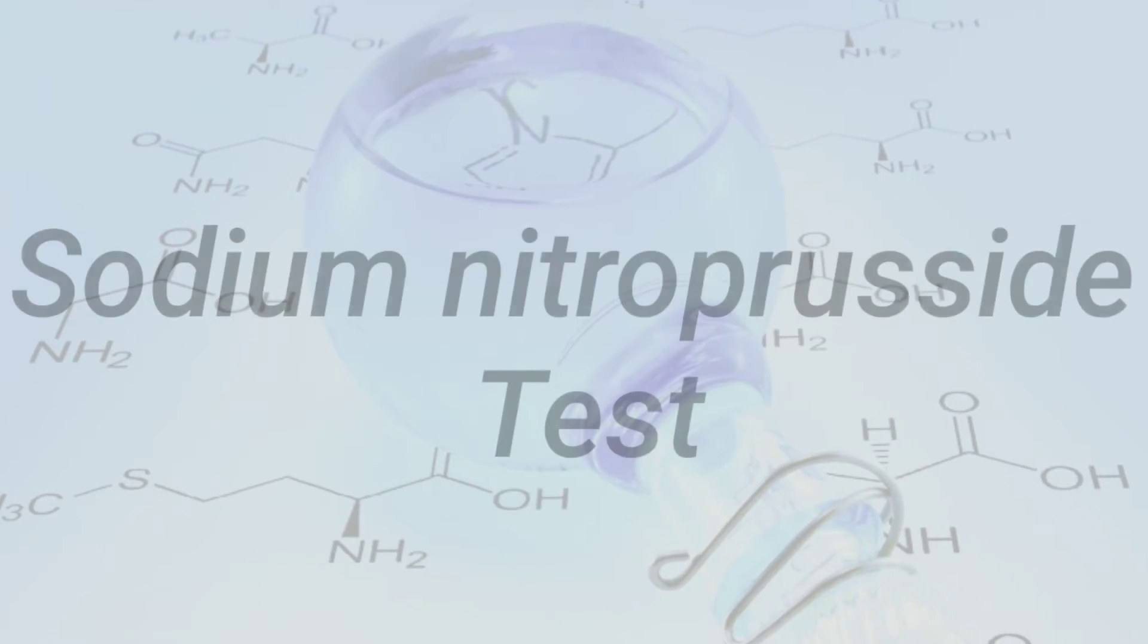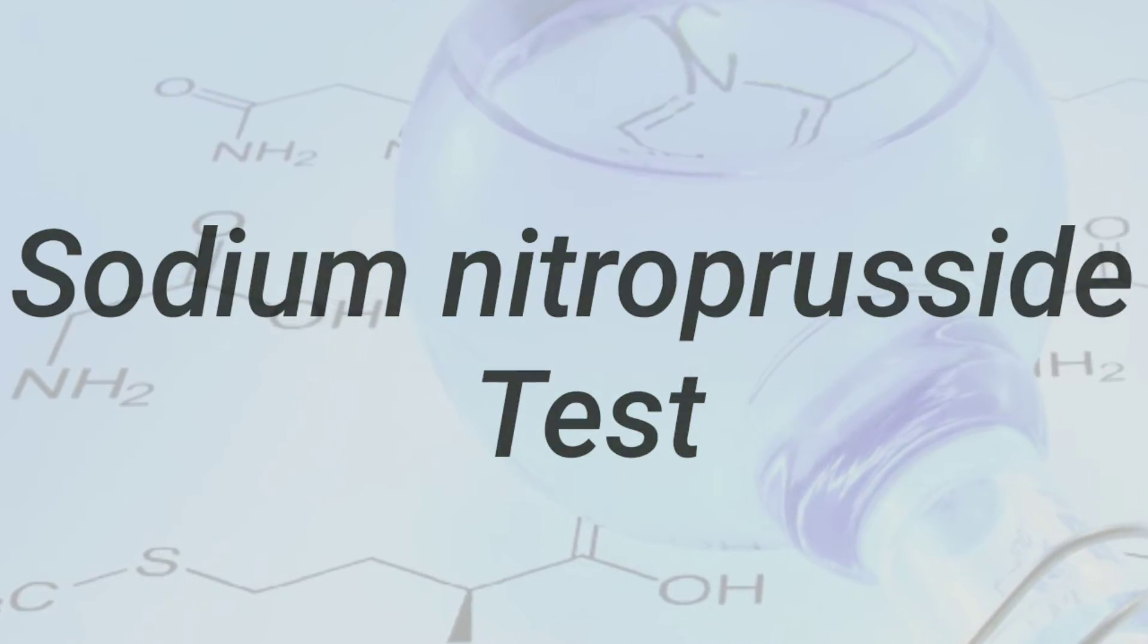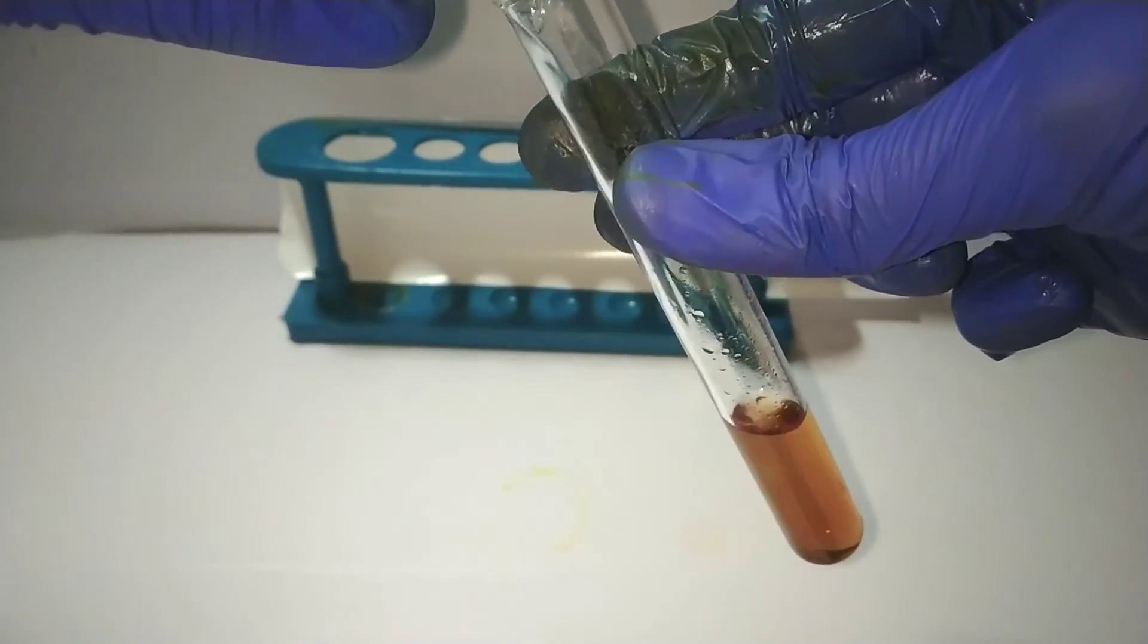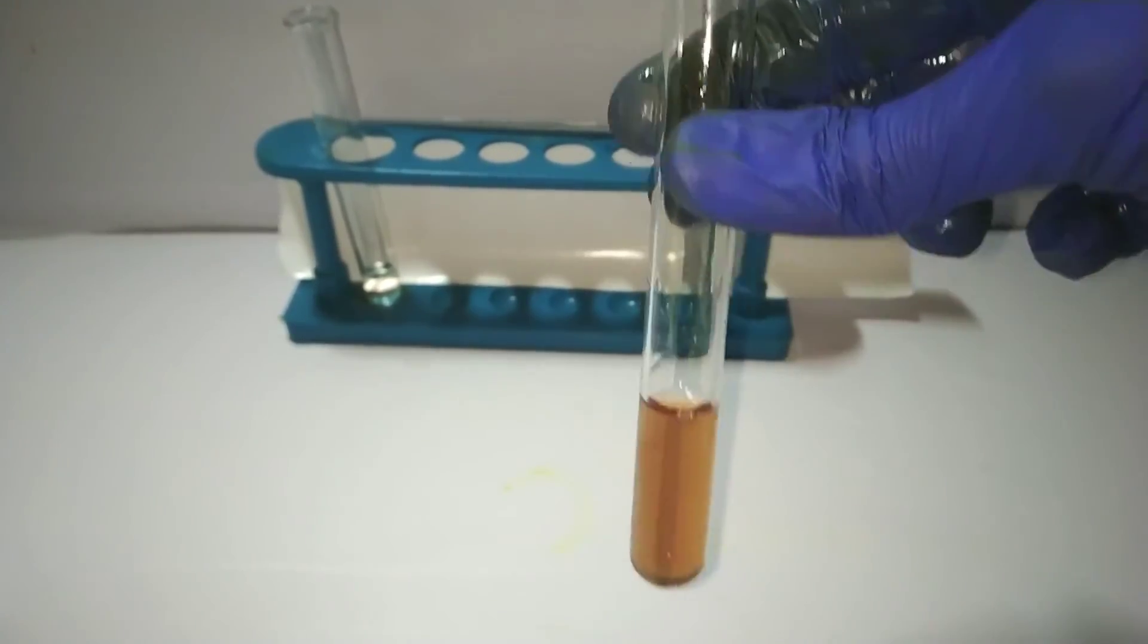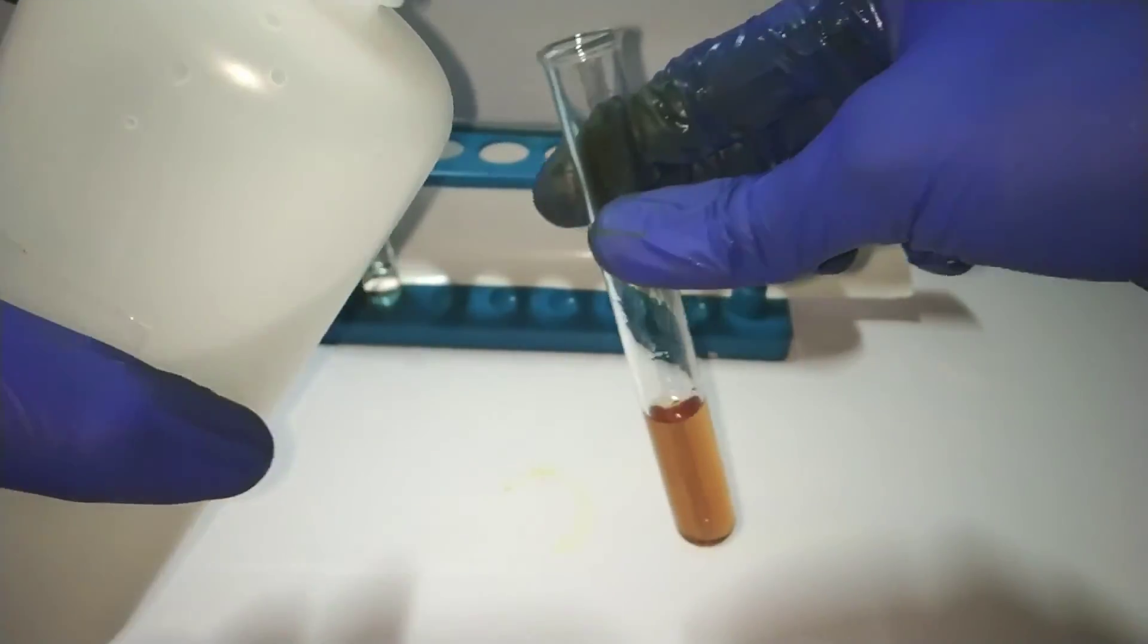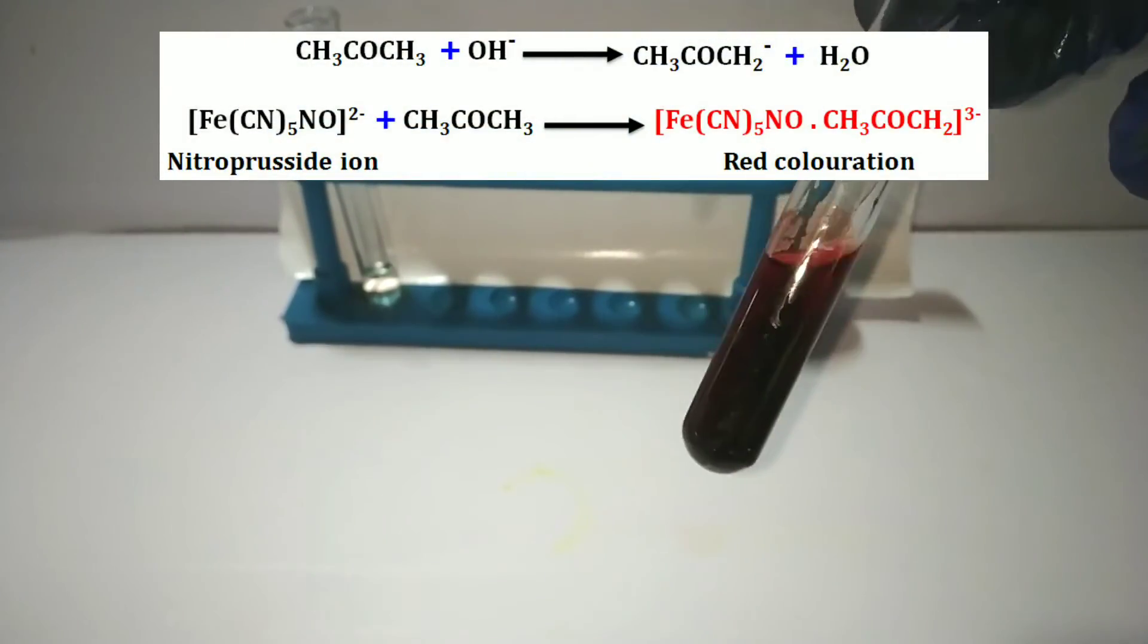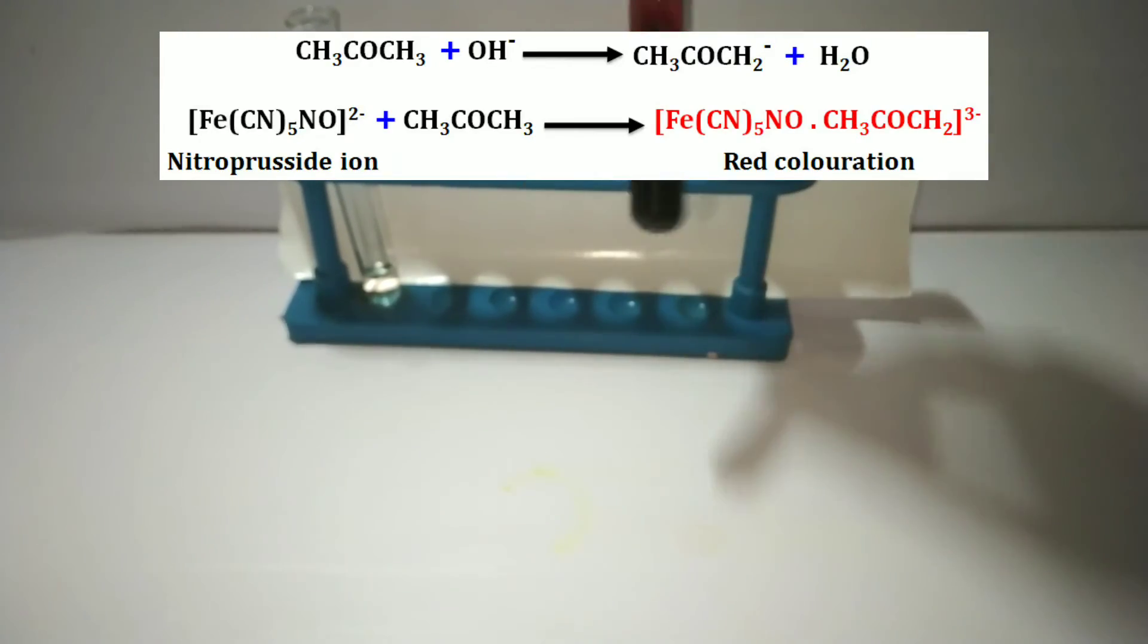The last test is the sodium nitroprusside test, which is also a specific test for ketone. For this test we take a few milliliters of the sodium nitroprusside solution in a test tube. Then we add the organic compound into it. After that, we add few milliliters of the 3 molar sodium hydroxide solution. Immediately you observe the formation of a deep red color. What's happening here is in the presence of alkali, ketones react with nitroprusside to form blood red colored complex.